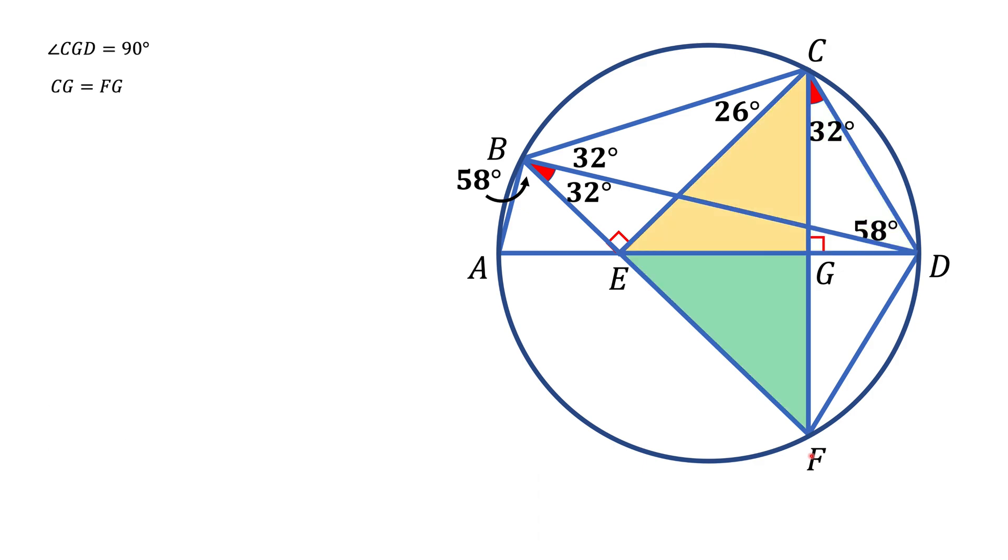Next, we'll look at the yellow triangle and the green triangle. These triangles are congruent by side-angle-side: the sides CG and GF, the 90-degree angle, and the shared side EG. Since they're congruent, corresponding sides and angles are congruent. In particular, the purple angles are congruent.